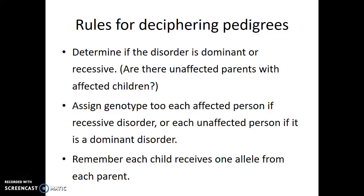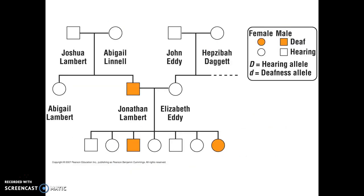Keep in mind that each child receives one allele from each parent. In pedigrees, males are always represented as squares and females are represented as circles. Usually, that square or circle will be shaded in if that individual is showing the disease or trait of interest. Generations are arranged in horizontal lines and vertical lines connect one generation to the next, showing the offspring of that previous couple.